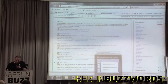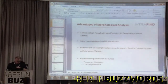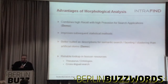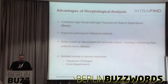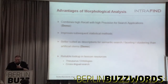Morphology is also useful if you have ontologies or thesauri, or for cross-lingual search where you need to look up items in lexicons. Lexicons don't contain full forms — they contain base forms. So before doing the lookup, you have to normalize your input to base forms. You need morphology again.